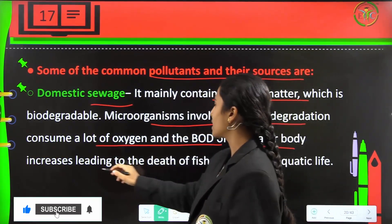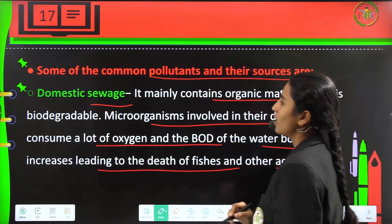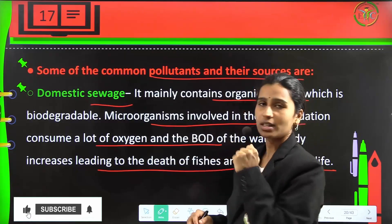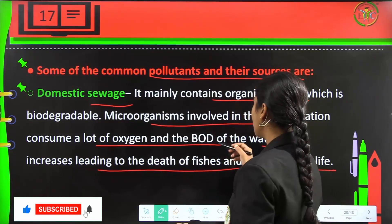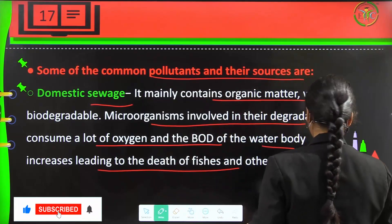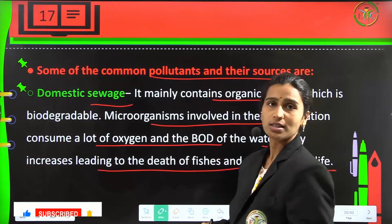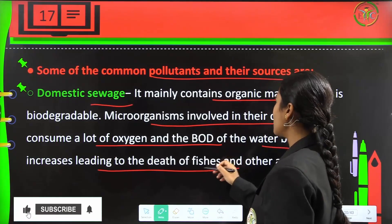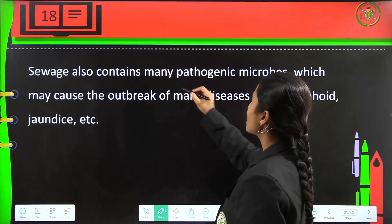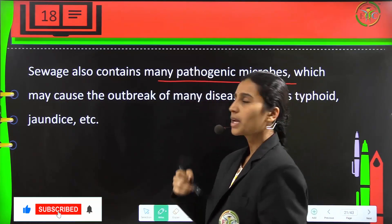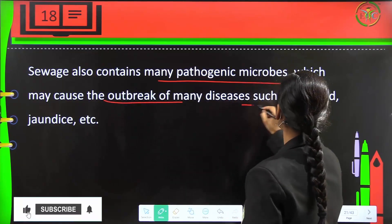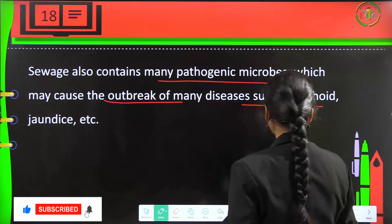The increasing BOD — biological oxygen demand — is leading to the death of fish and aquatic species. Sewage also consists of many pathogenic microbes, which have been causing the outbreak of many diseases like typhoid and jaundice.